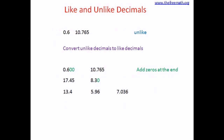In the next example, the numbers are 13.4, 5.96, and 7.036. The first decimal has one decimal place, the second one has two decimal places, and the third one has three decimal places. To convert these into like decimals, we need to make sure all numbers have three decimal places each. So we put two extra zeros at the end of the first number and one extra zero at the end of the second number, converting them all to like decimals.